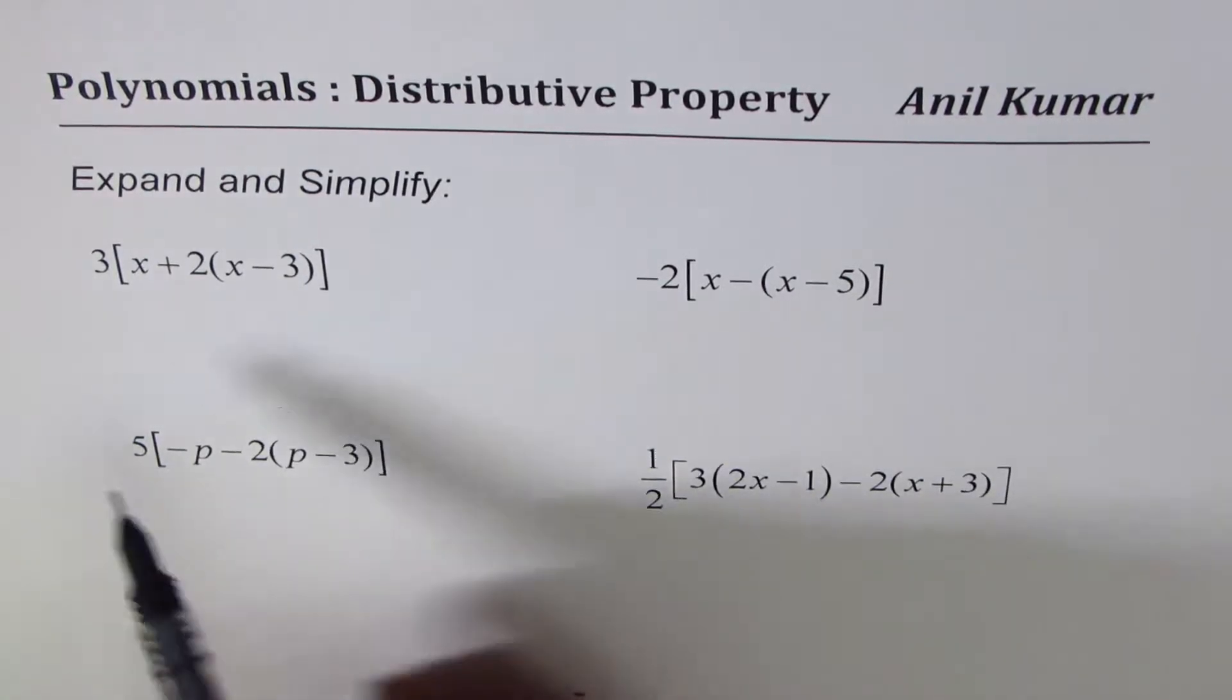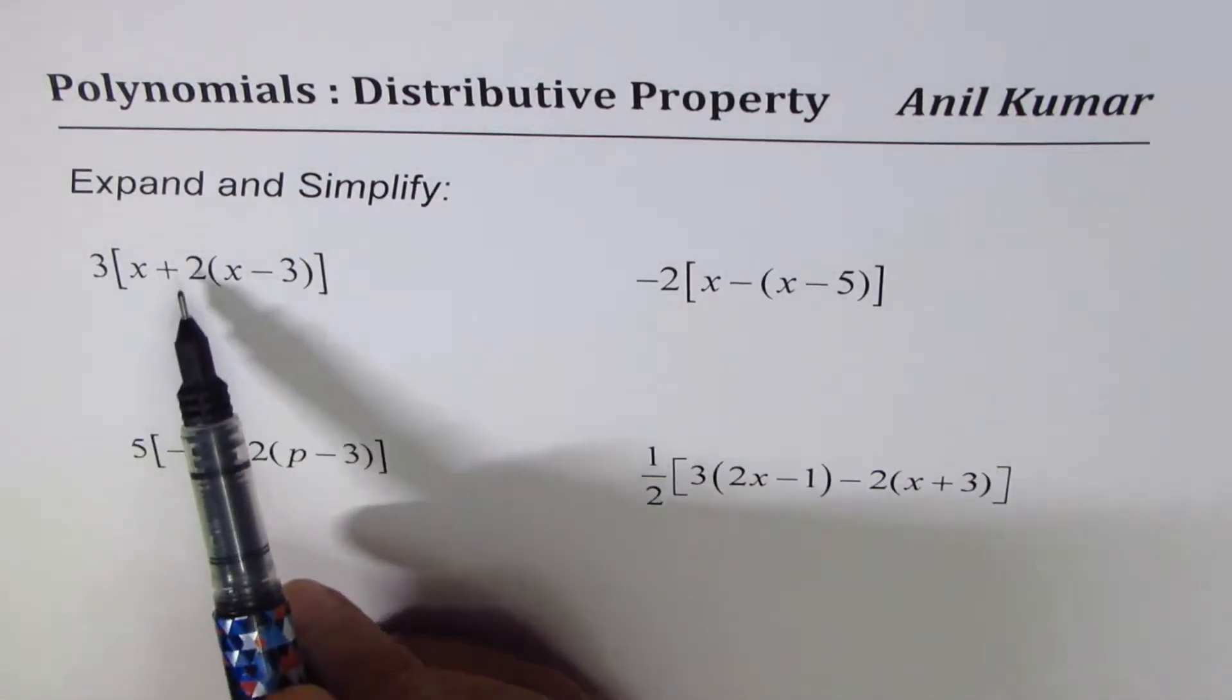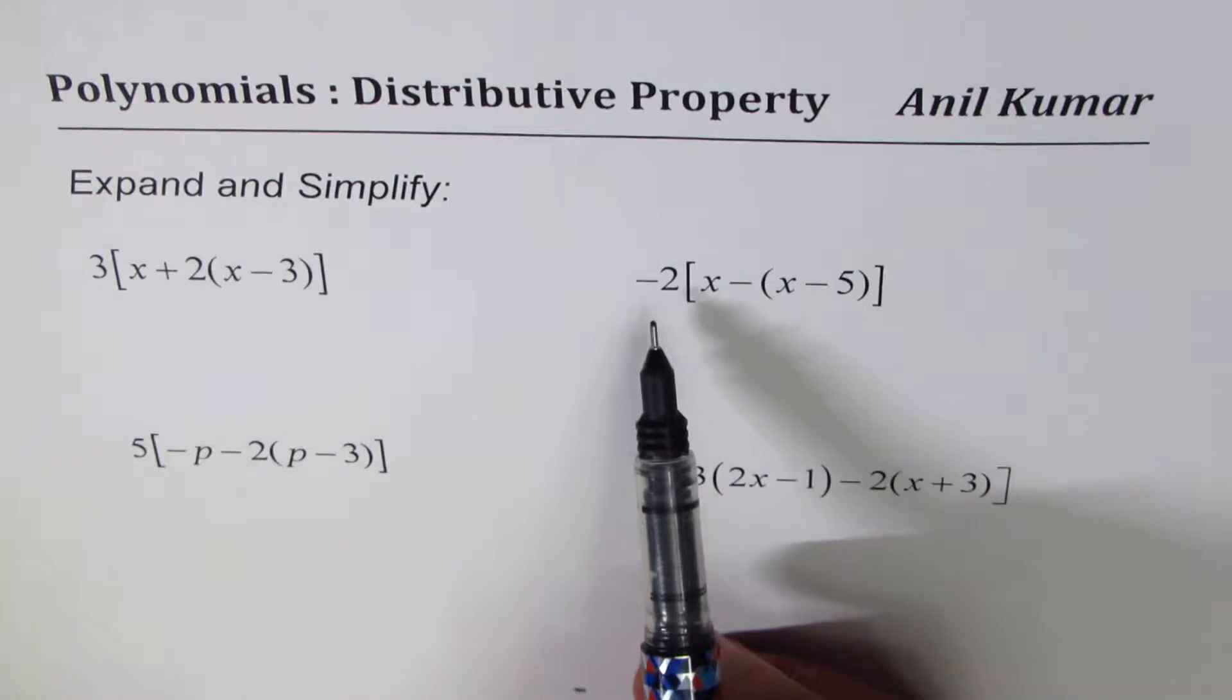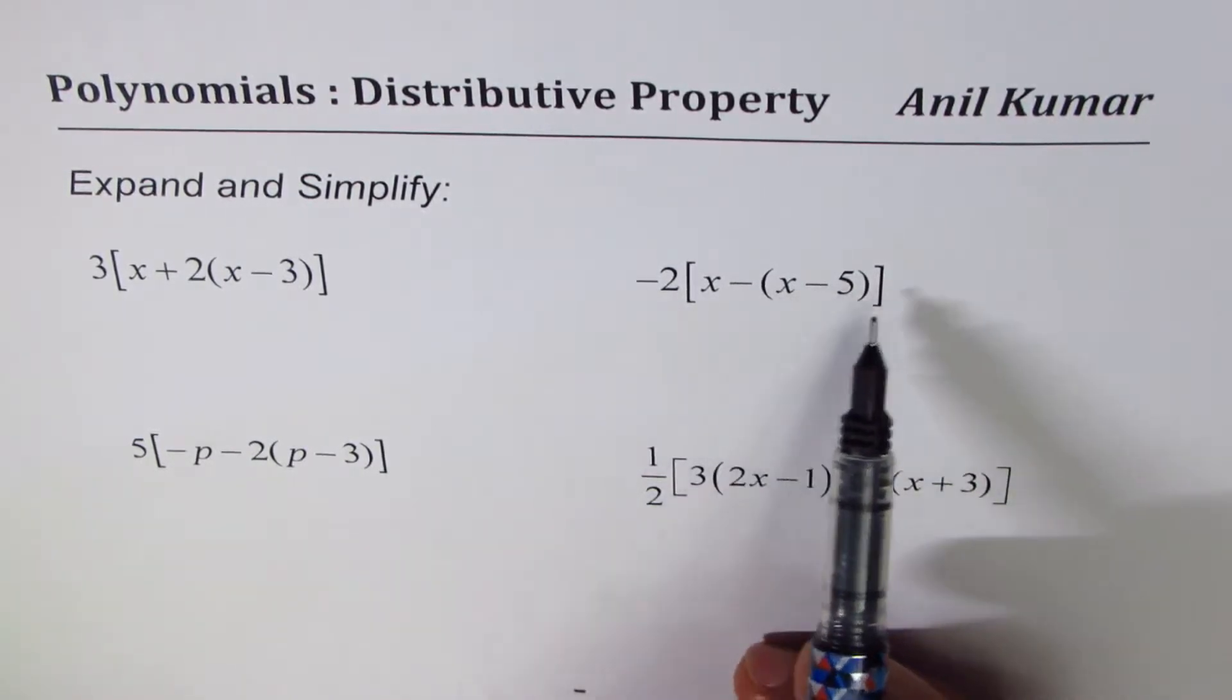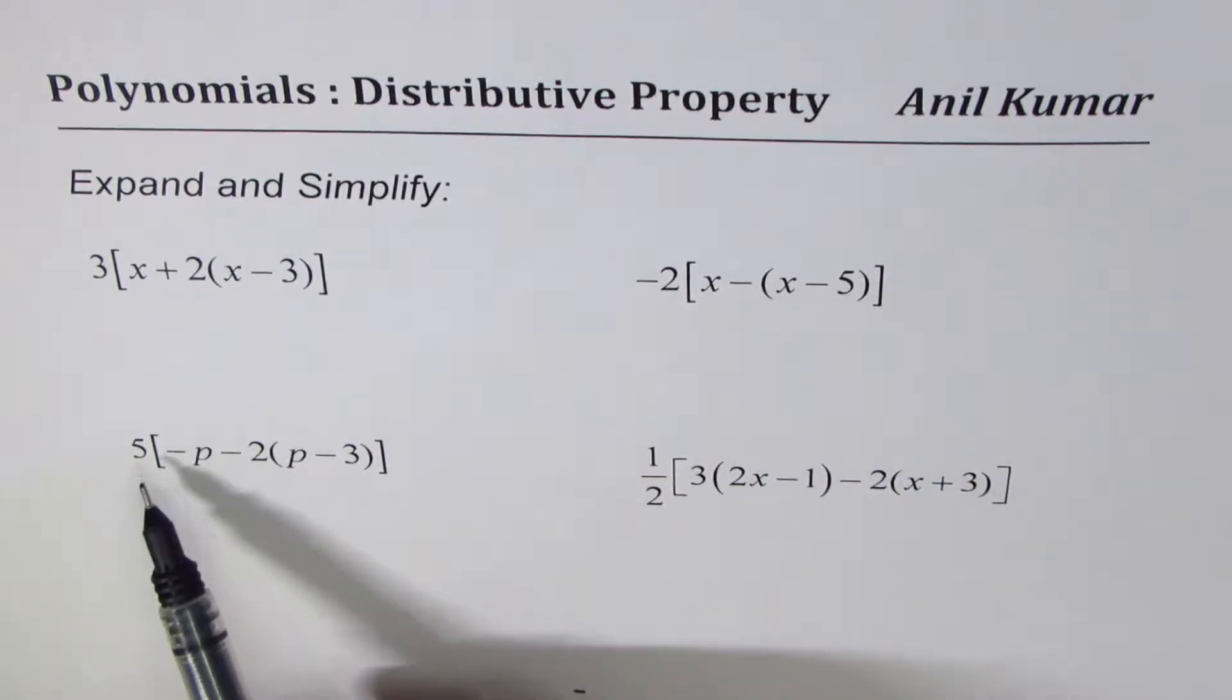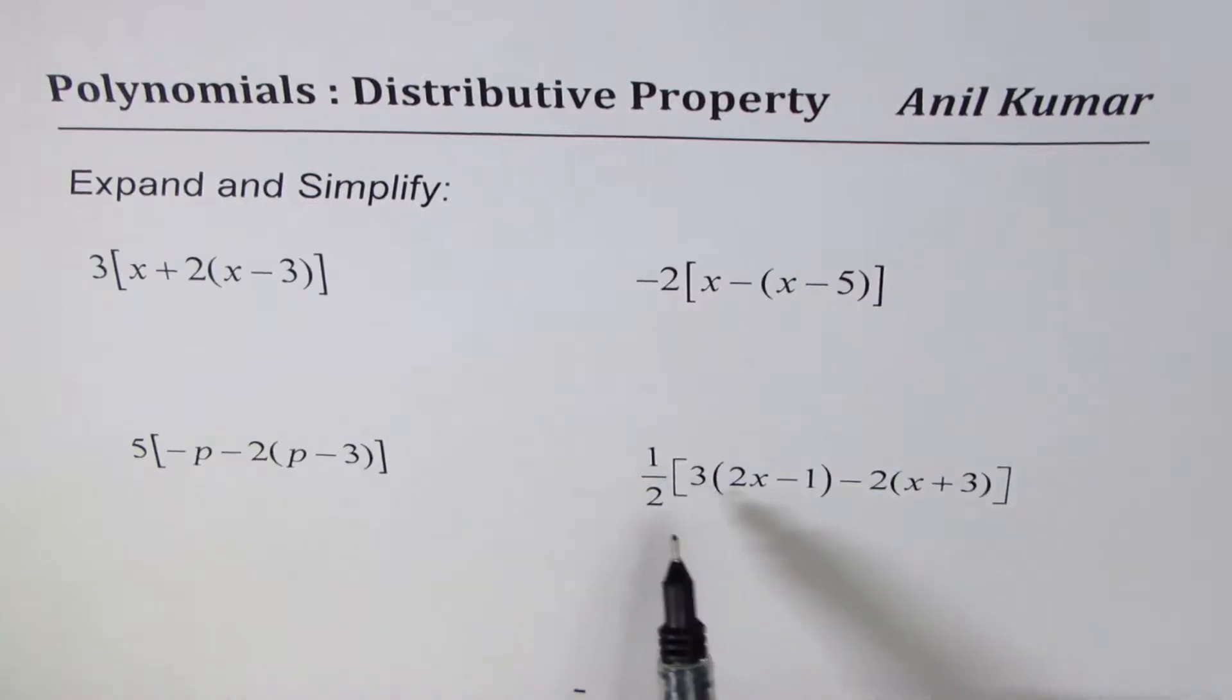The first one here is 3 times within bracket x plus 2 times x minus 3. Then we have minus 2 times x minus x minus 5. Third: 5 times minus p minus 2 times p minus 3. And fourth: half times 3 times 2x minus 1 minus 2 times x plus 3.